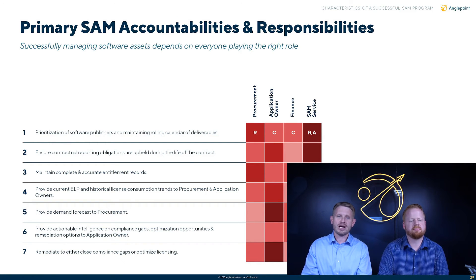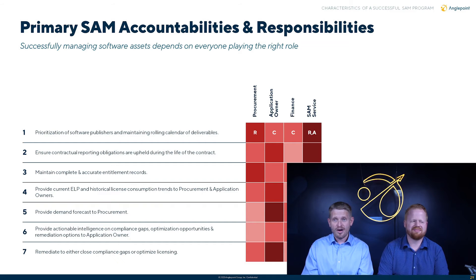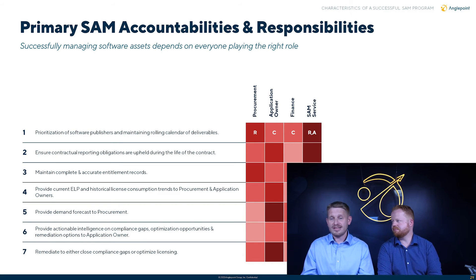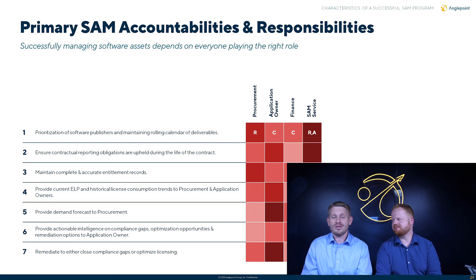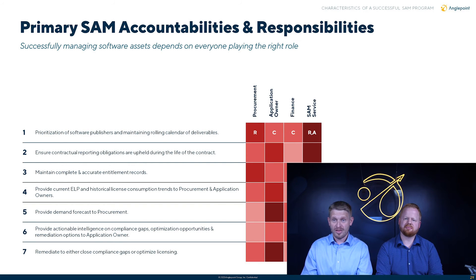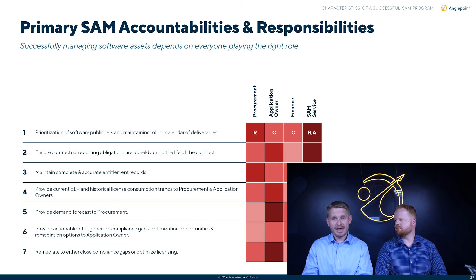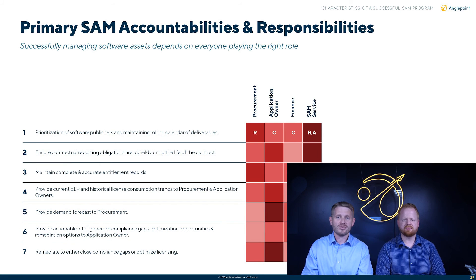Looking at this visual, these are example work streams. If you look at number five — provide demand forecast to procurement — oftentimes the SAM service gets assigned that task, but the SAM team has no idea what will be demanded by the business in the future. We know how software is licensed; we don't know the future. That should come from product management, enterprise architecture, or strategy — they would be accountable for that one. Also, maintain complete and accurate entitlement records — sometimes it's a sticking point: is that procurement or is that SAM? It depends on your organization. Coming up with this RACI chart can go a long way in building the organizational team and having them coordinate to accomplish great value for the SAM program.